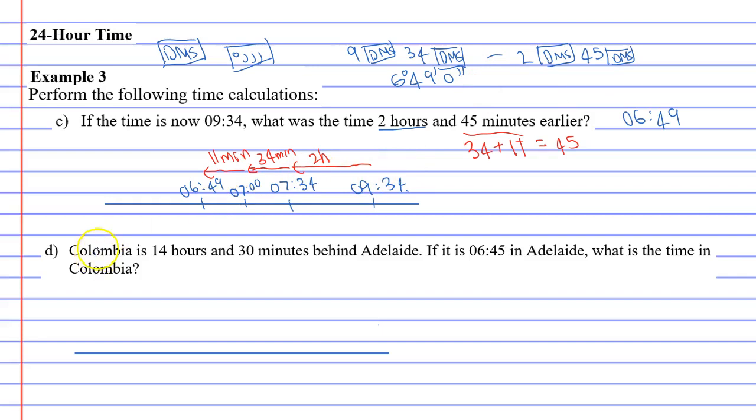Now, let's move on to question D, which says Columbia is 14 hours and 30 minutes behind Adelaide. If it is 6.45 in Adelaide, that's 6.45 hours or 6.45 a.m. in Adelaide, what is the time in Columbia?